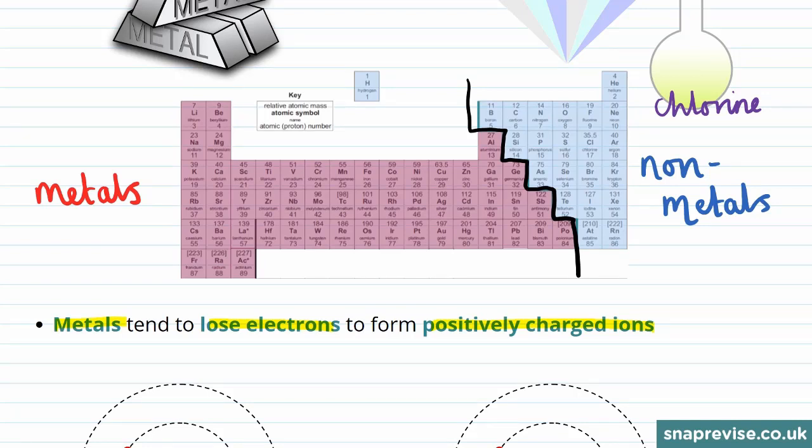Therefore, as we travel left to right across a row or period of the periodic table, we slowly fill up an electron shell.